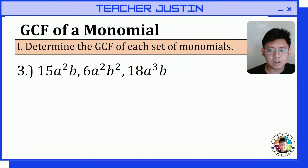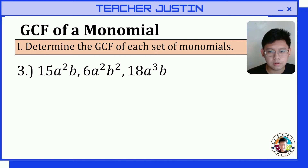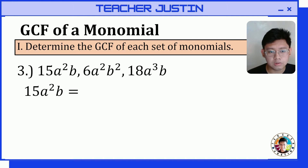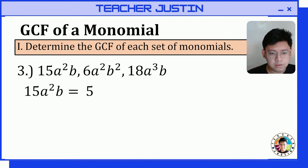Let's proceed to our third item. Let's determine the GCF of 15a squared b, 6a squared b squared, and 18a cubed b. We must apply prime factorization and get the prime factors of each monomial. The prime factors of 15a squared b are 5 times 3 times a times a times b.